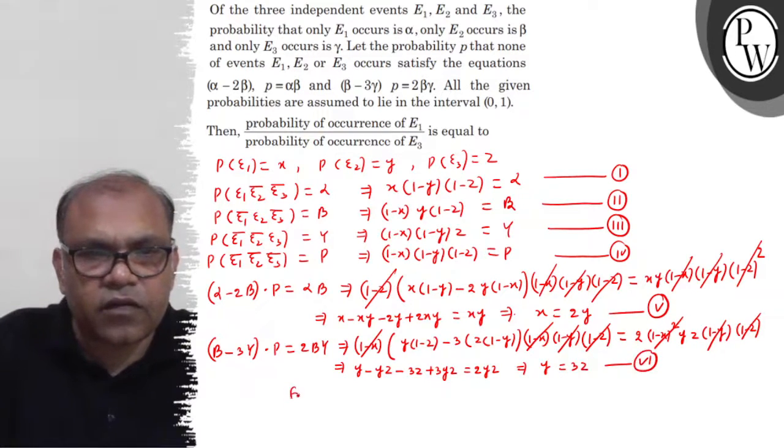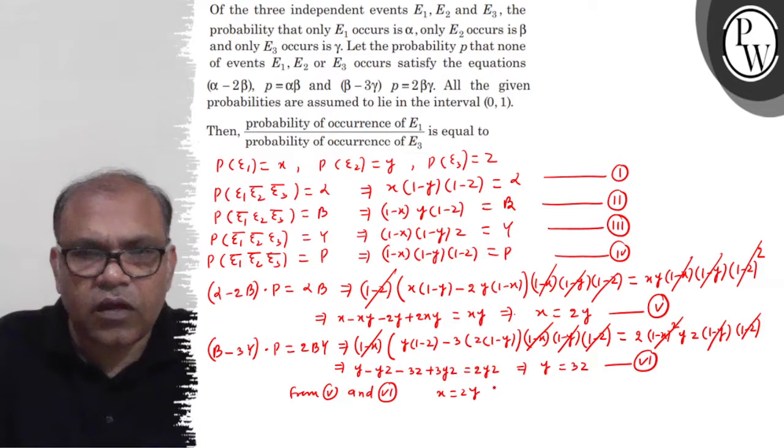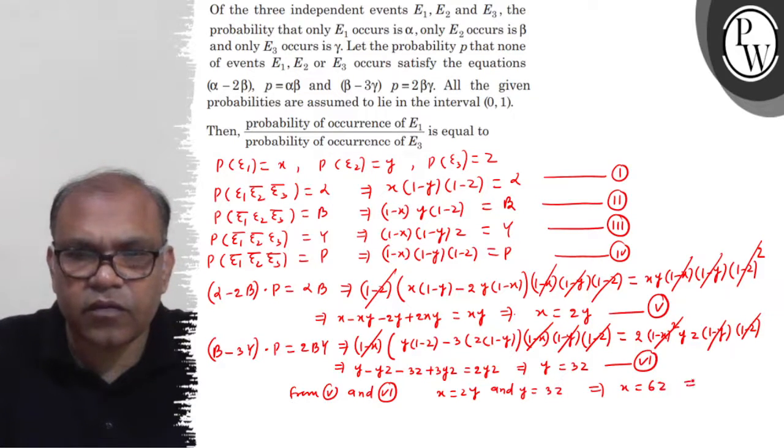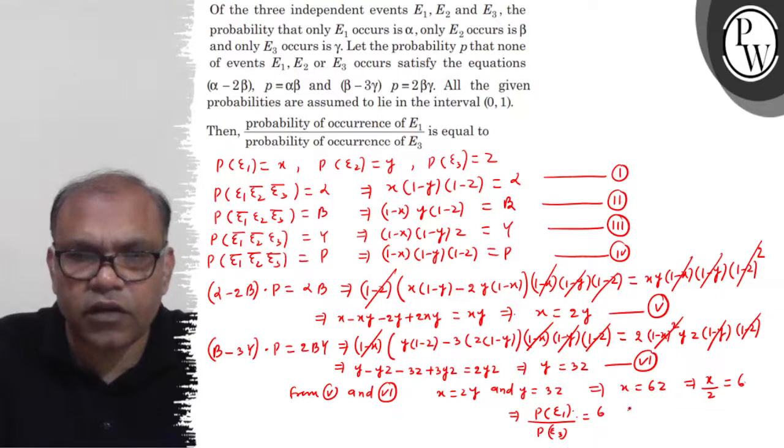From 5 and 6. Dekho 5 we state karta hai. X equals 2Y and Y equals 3Z. This implies X equals 6Z. This implies X upon Z equals 6. So you have to find probability of occurrence of E1 upon probability of occurrence of E3 is the value of 6. So your answer is 6.